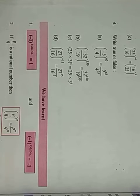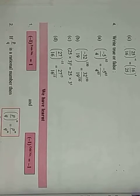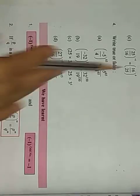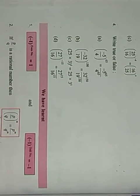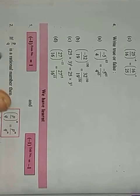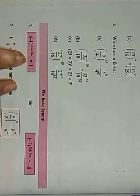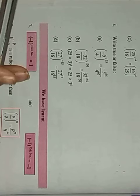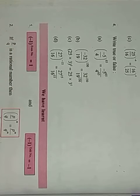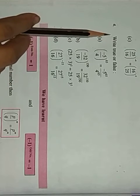Similarly, for question number three, you have to solve both sides. If both sides come out equal, then the question is proved. If both sides are not equal, then it is not proved. You will solve A and C and try once.